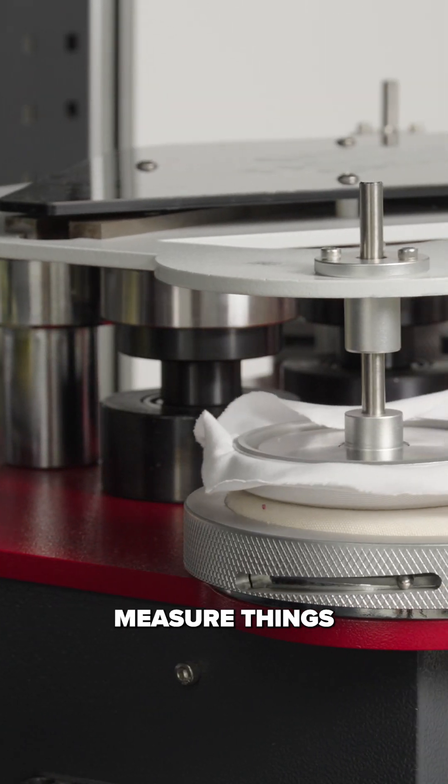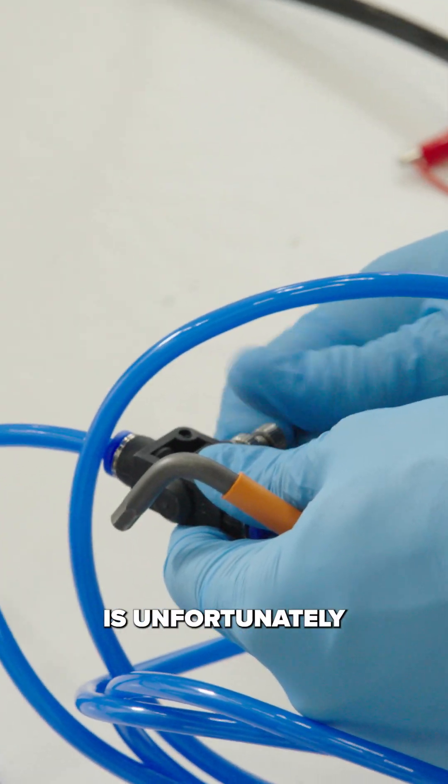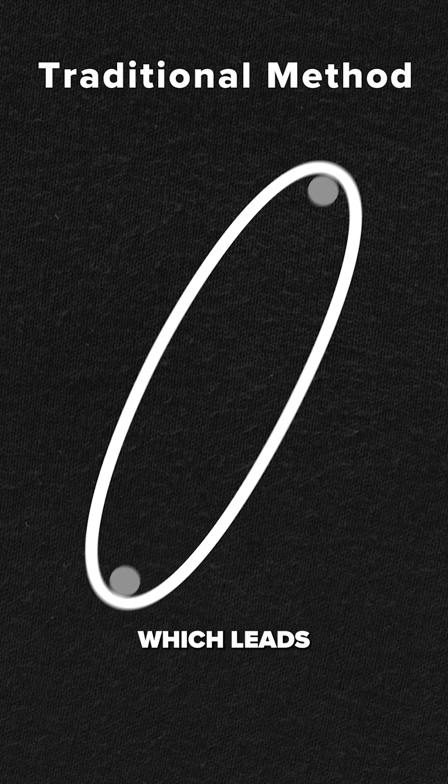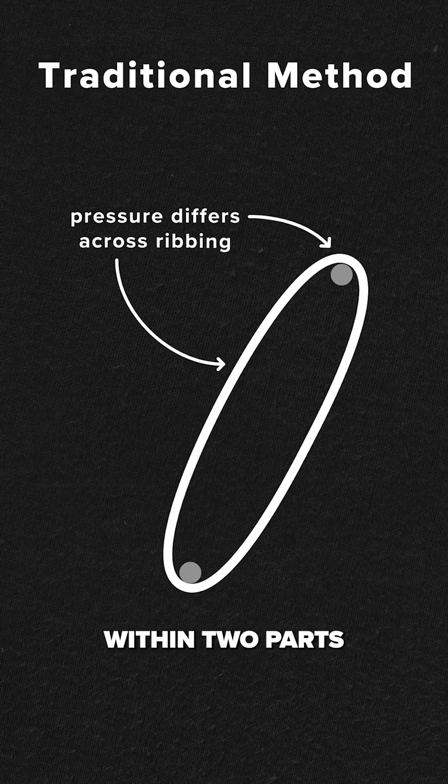We always try to objectively measure things. And the current test methods, unfortunately, use two metal pins that just stretch it linearly, which leads to a lot of pressure within two parts.